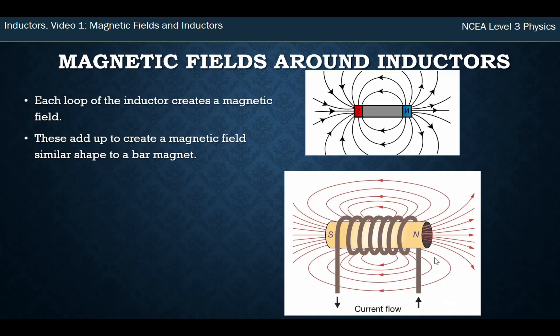So there's our picture of a bar magnet. I've just inverted this one so it looks like it's going in the same direction. And you'll notice that the field around a coil looks similar. It comes out of one end, loops around, goes back to the other end.